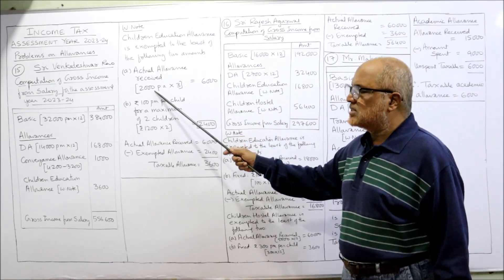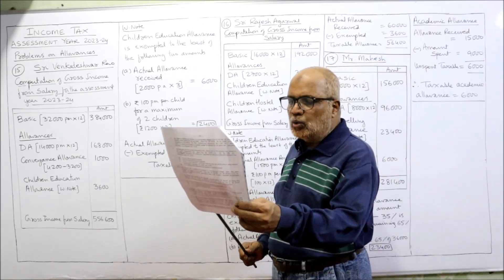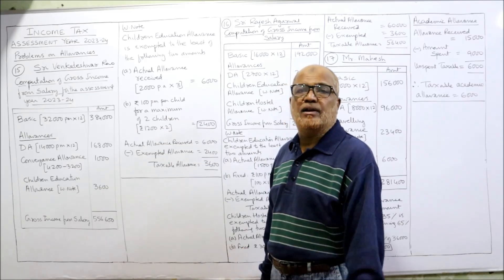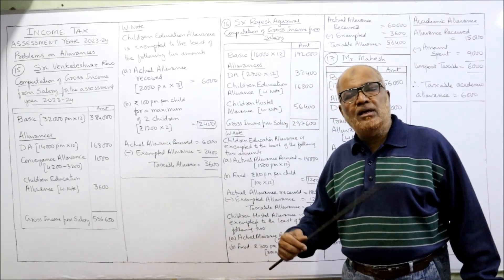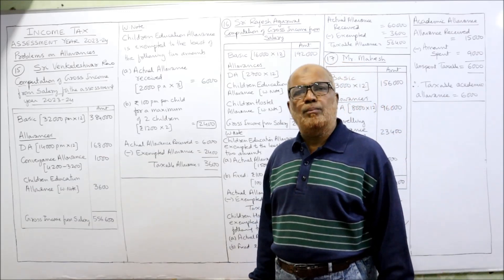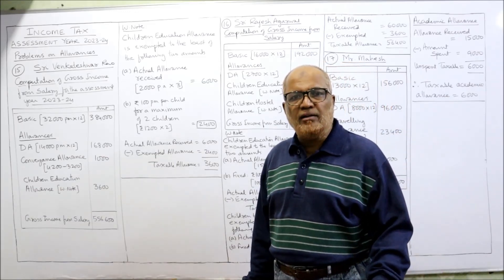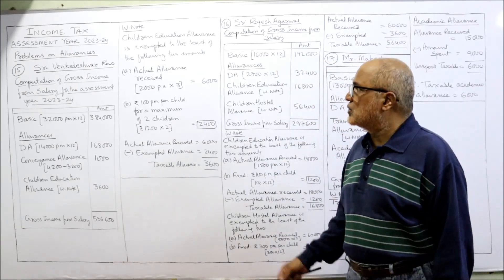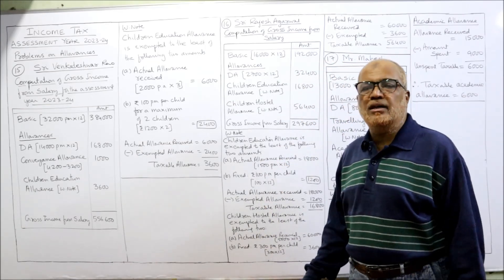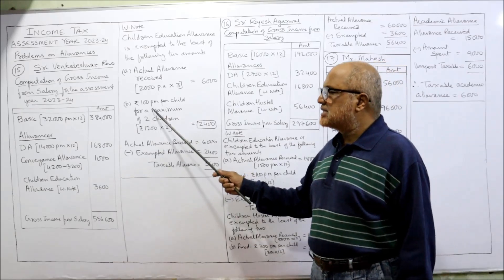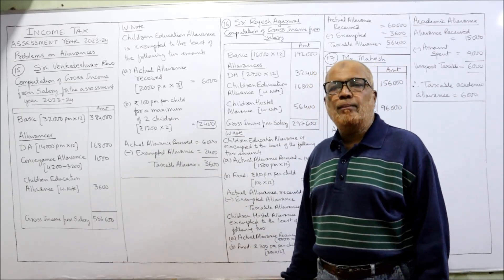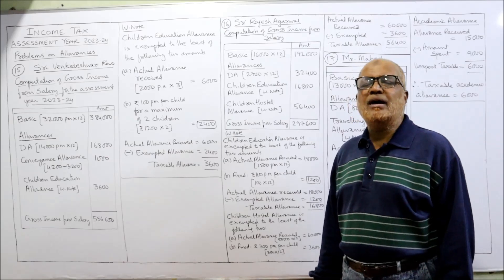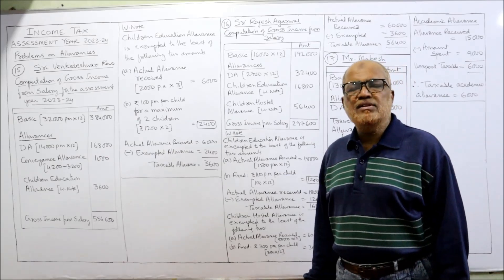The employer may give the allowance for any number of children, but the Income Tax Act has set the ceiling at 1,200 per annum per child for a maximum of two children. Here, the children education allowance exemption is the least of: actual allowance received — 2,000 per annum per child for three children, so 3 into 2,000 equals 6,000 rupees received. The fixed ceiling is 100 per month per child for a maximum of two children.